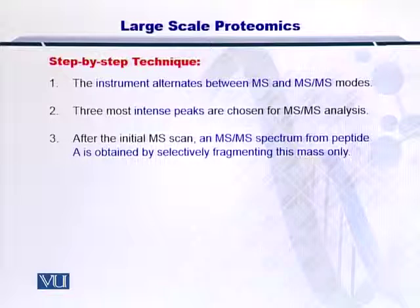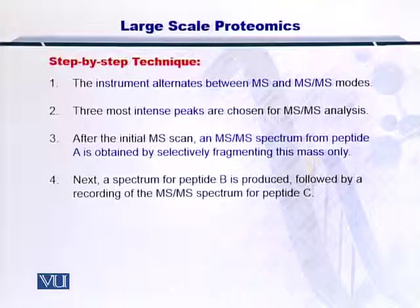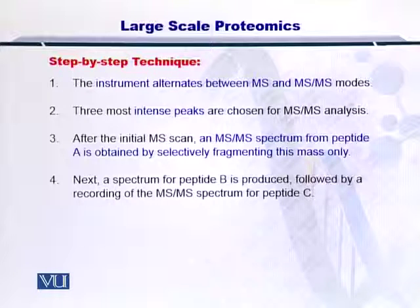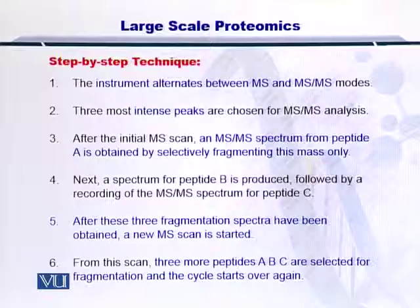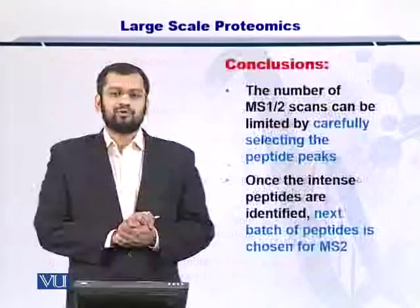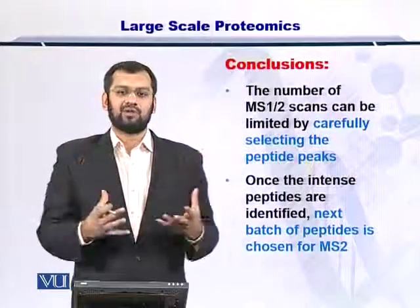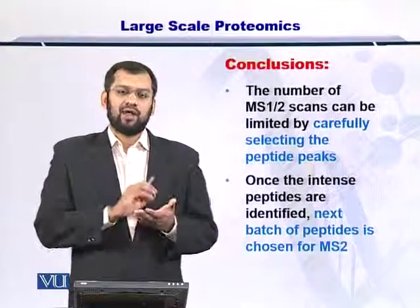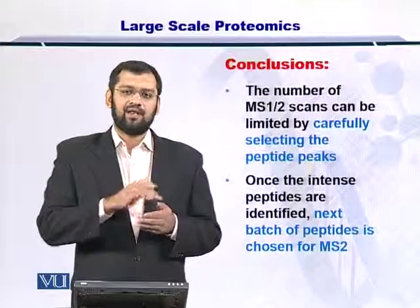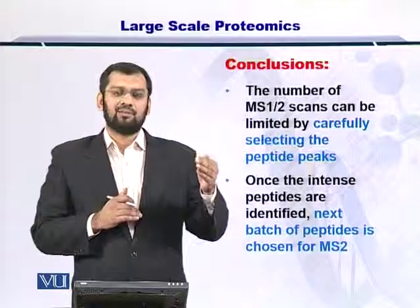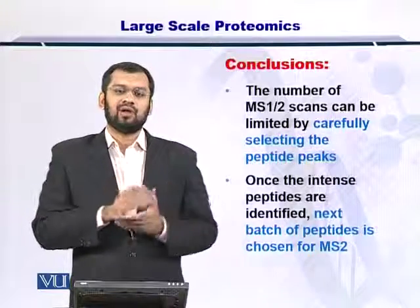After the initial MS scan, an MS-MS spectrum from peptide A is obtained by selectively fragmenting that peptide only. Next, peptide B is selected and MS-MS is performed on it, followed by peptide C and so on. Once all the higher-quality peptides A, B, and C are processed, the next batch of peptides is inducted for analysis. This cycle repeats until you have analyzed the entire sample. In conclusion, for large-scale proteomics, you follow MS1 with MS2 for a specific peptide, then move to the next peptide, performing MS1 and MS2 throughout, arriving at their molecular weights.